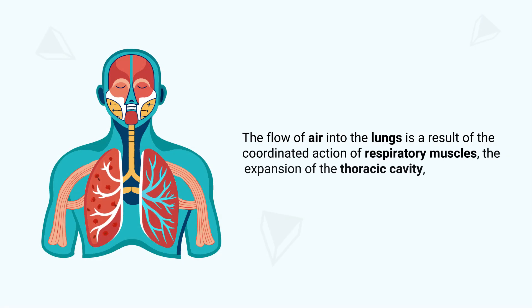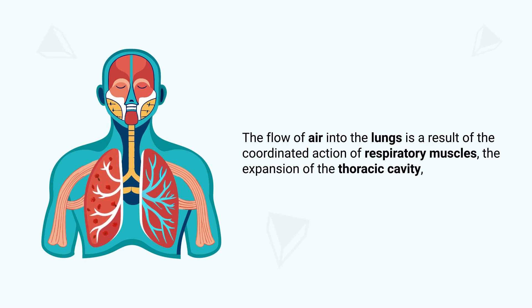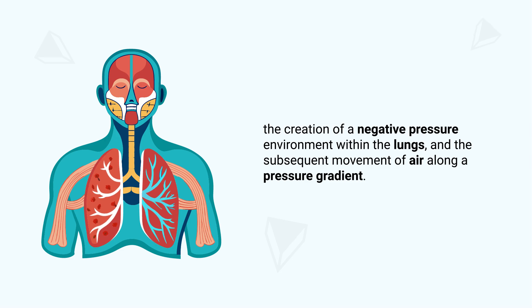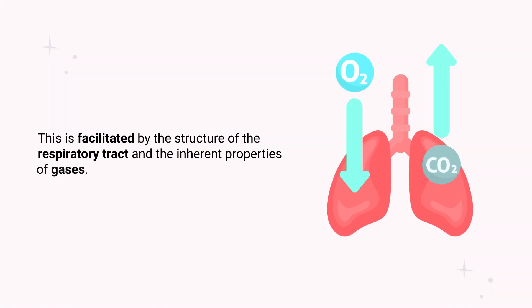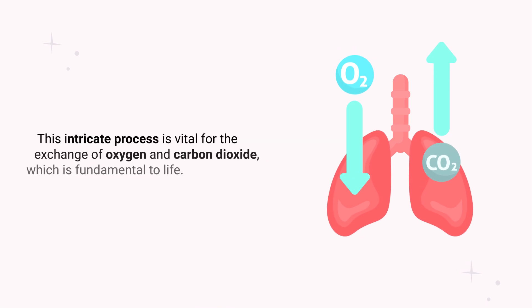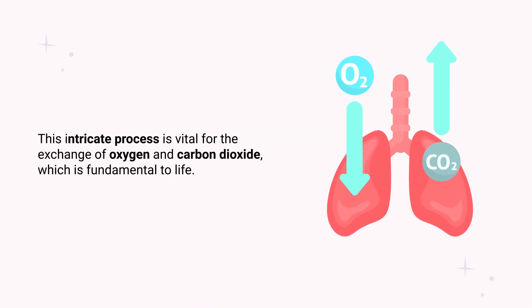The flow of air into the lungs is a result of the coordinated action of respiratory muscles, the expansion of the thoracic cavity, the creation of a negative pressure environment within the lungs, and the subsequent movement of air along a pressure gradient. This is facilitated by the structure of the respiratory tract and the inherent properties of gases — a process vital for the exchange of oxygen and carbon dioxide, which is fundamental to life.